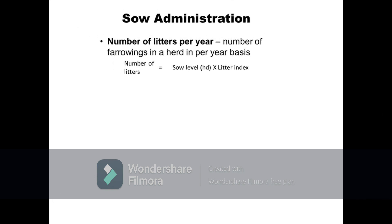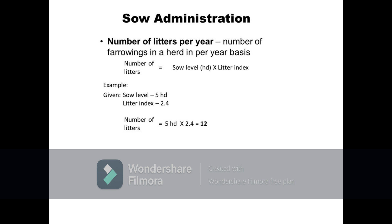Next parameter is the total number of litters per year, which refers to the total number of farrowings that occurred on a per year basis. It is the product of sow level and the litter index. For example, a 5-sow level farm that has a 2.4 litter index would have a total number of litters per year of 5 times 2.4, equals 12 litters.